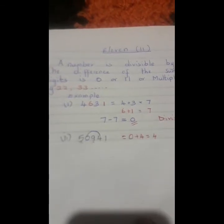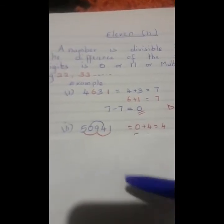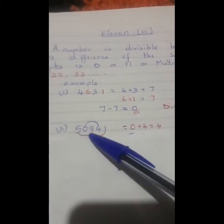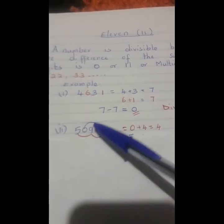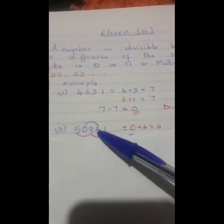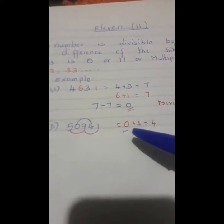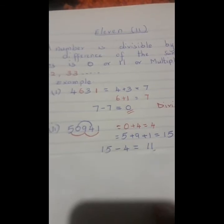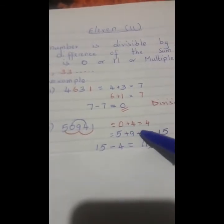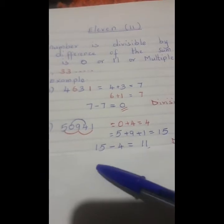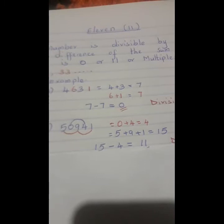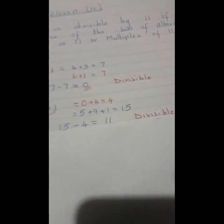The second example I have for you is 50,941. The alternate numbers are 5, 9, and 1, and then we have got 0 and 4. If we add 0 plus 4 is 4, and then 5 plus 9 plus 1 is 15. When we subtract 15 take away 4, we shall have 11, and also this one is divisible.